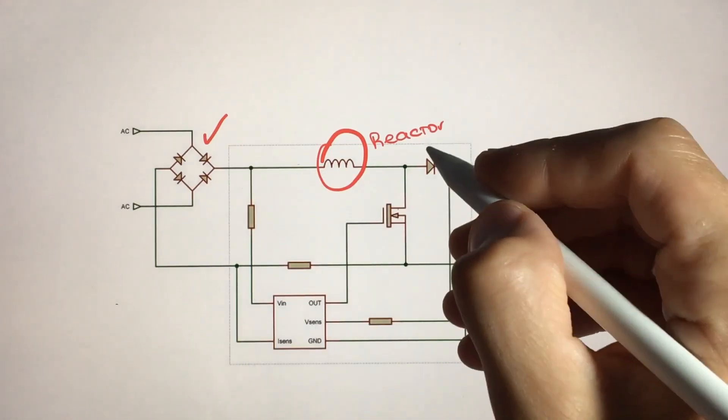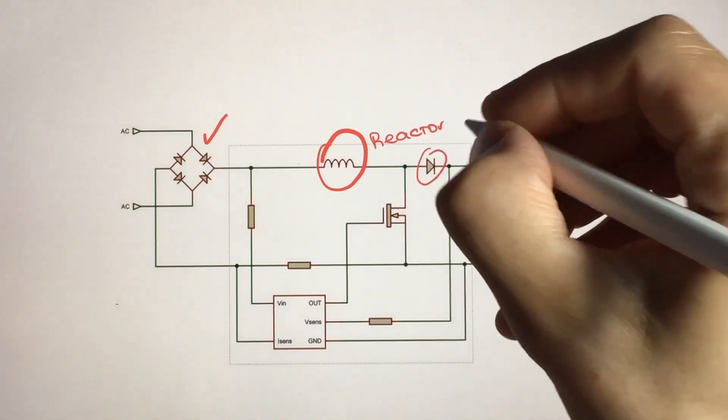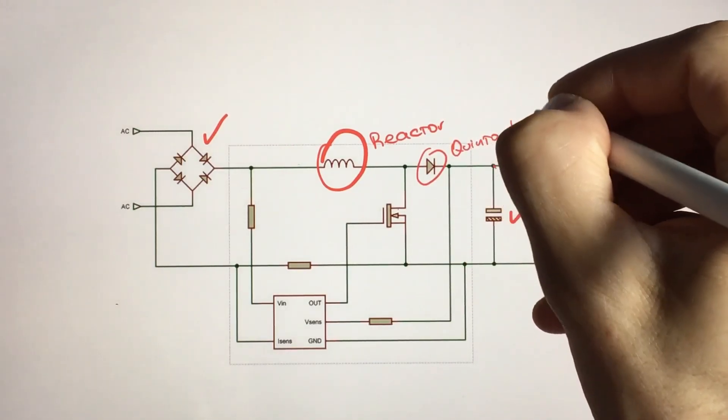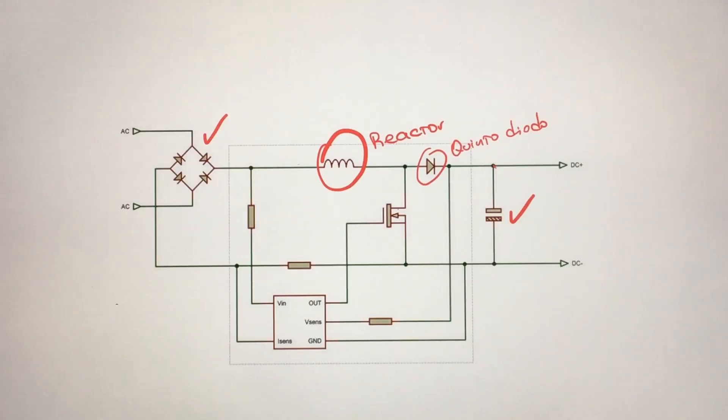In the positive channel, you will also find a fifth diode. Its function is also to divide what happens here from what happens here, as it happened to detect zero crossing, but now for something different.